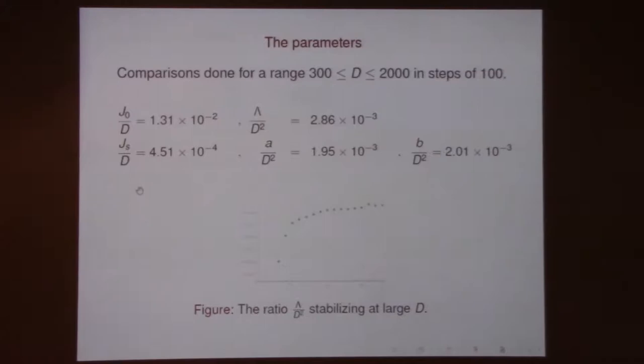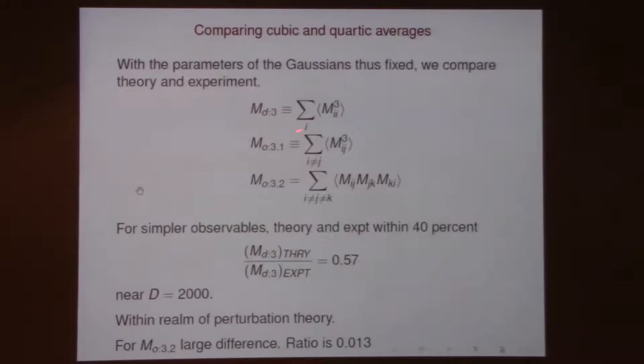To do that, you use your model. In the Gaussian model you have some expectation values — cubic ones, let's say — and you can compute them using Wick's theorem. This would involve some quadratic times linear terms. You just calculate this, and then go back and calculate the same expectation values from the data. And you say: how well does the theory compare to the data?